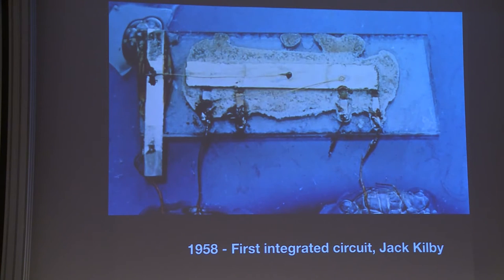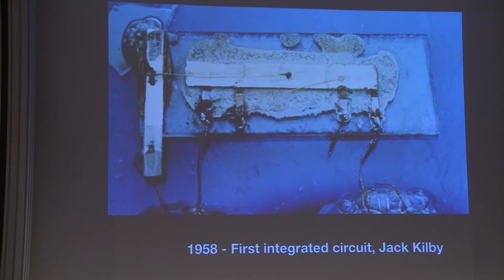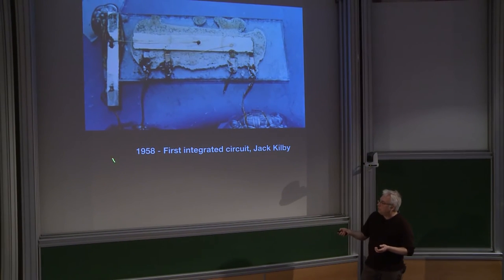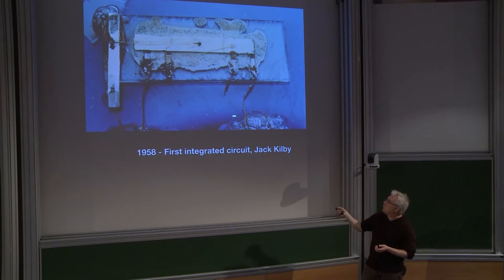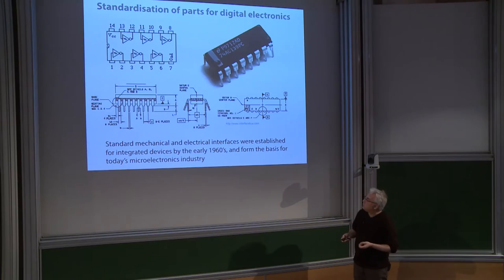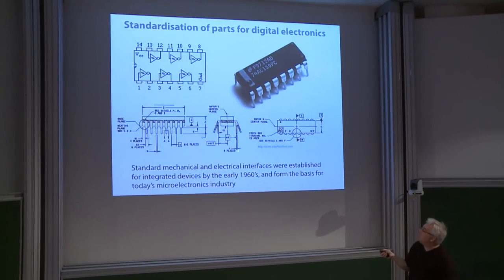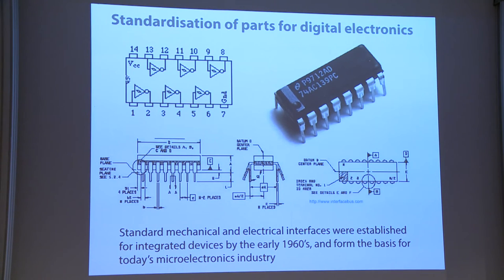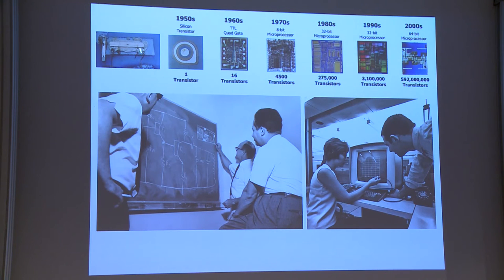Going back to 1958—Jack Kilby's first integrated circuit at Texas Instruments had five logic devices. By the early 1960s, precise physical and electronic standards were formulated for putting these devices together in larger-scale circuits. Moving from Kilby's circuit through the first planar transistor, the first integrated circuits, to today's modern microprocessor with four to five billion logic elements—this process started with hand design using direct interaction with substrates, where individuals had to know and understand everything about the process.